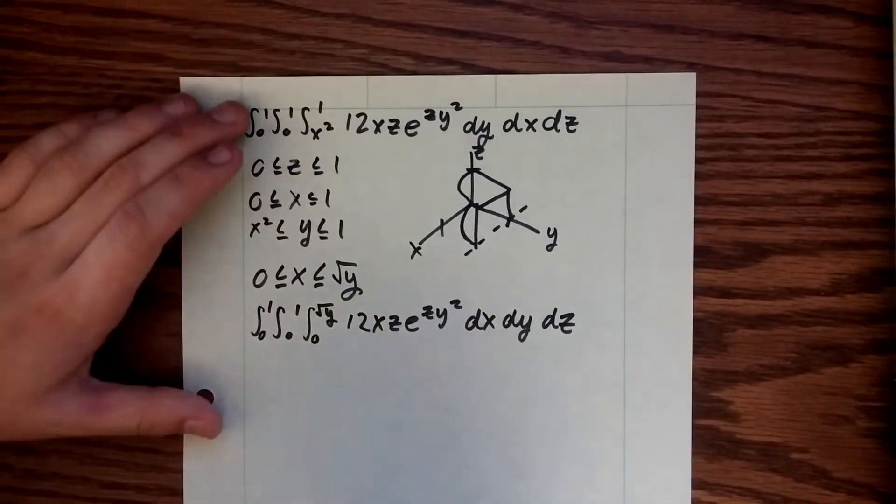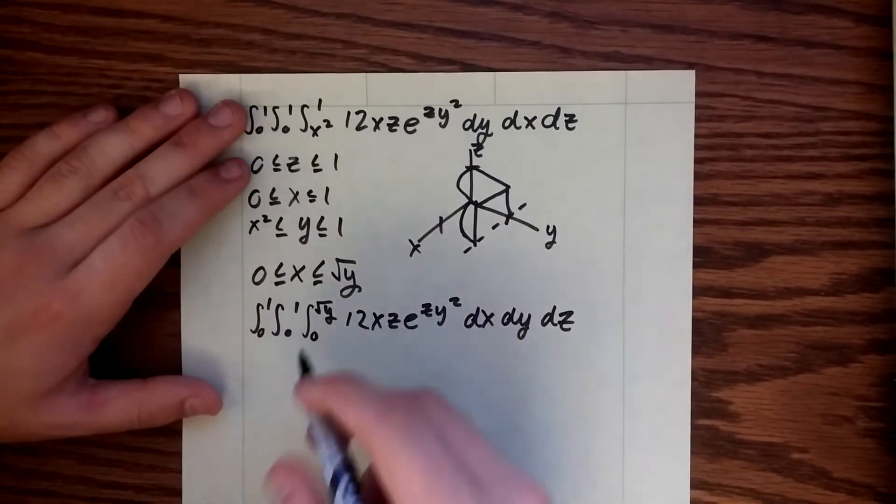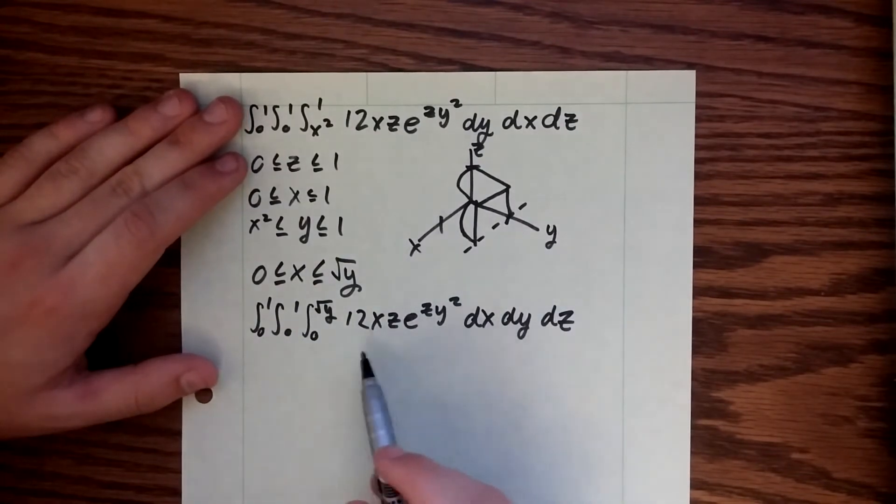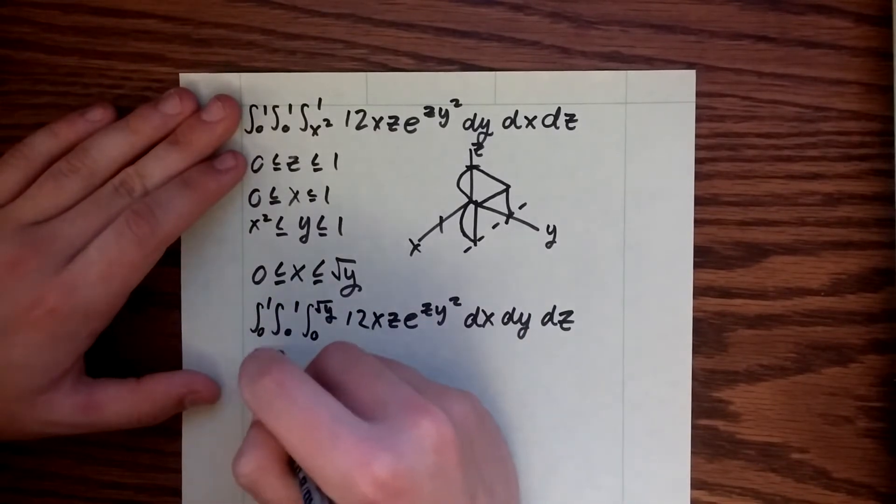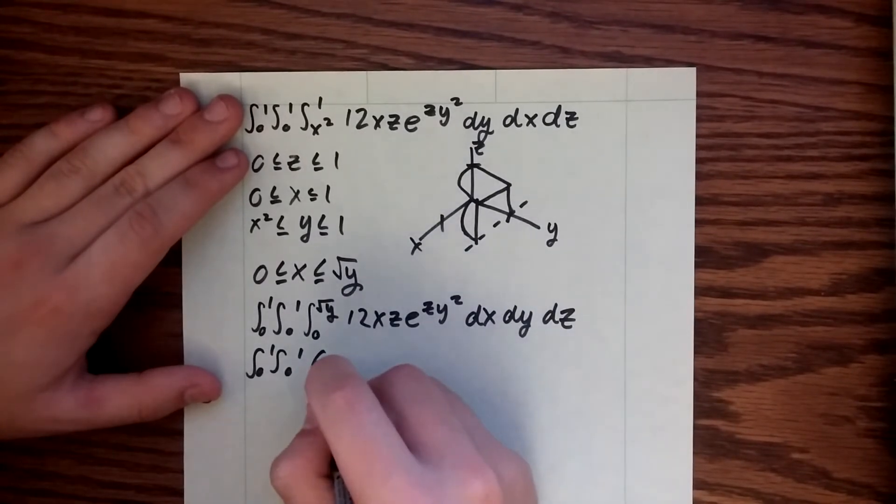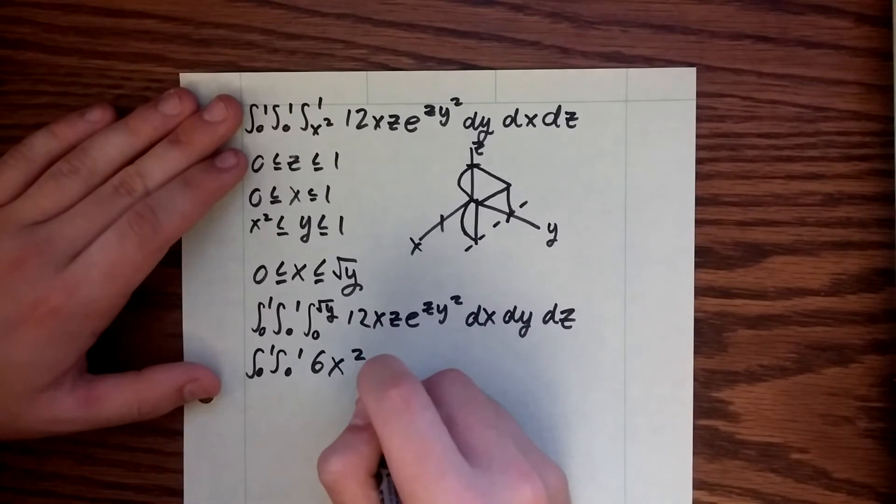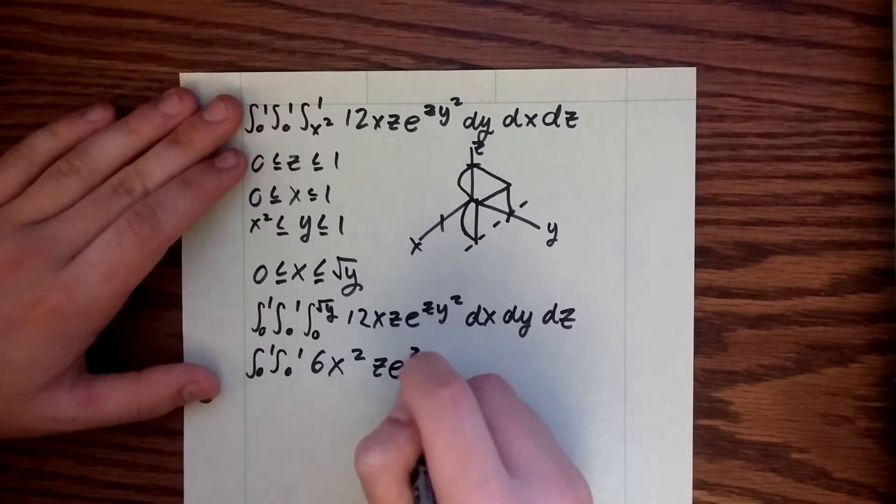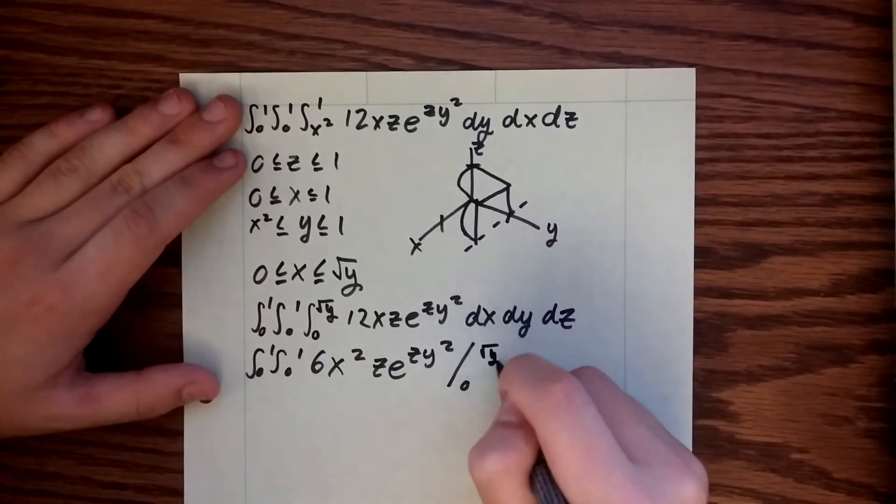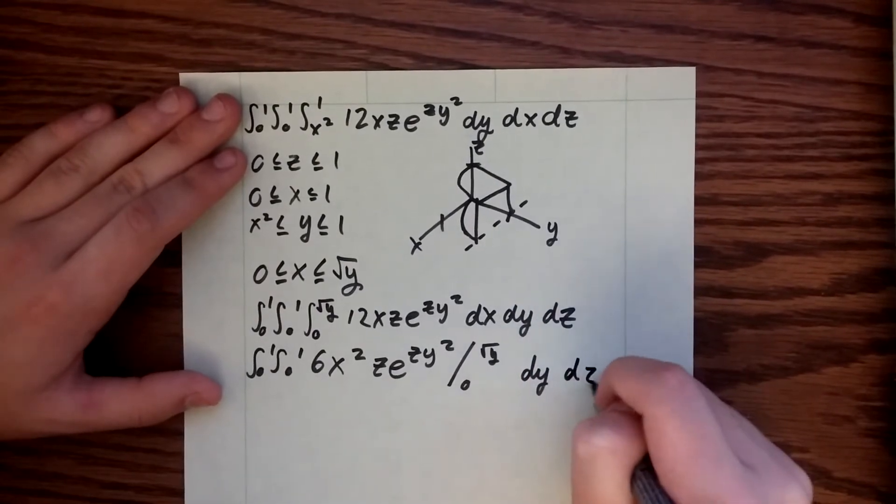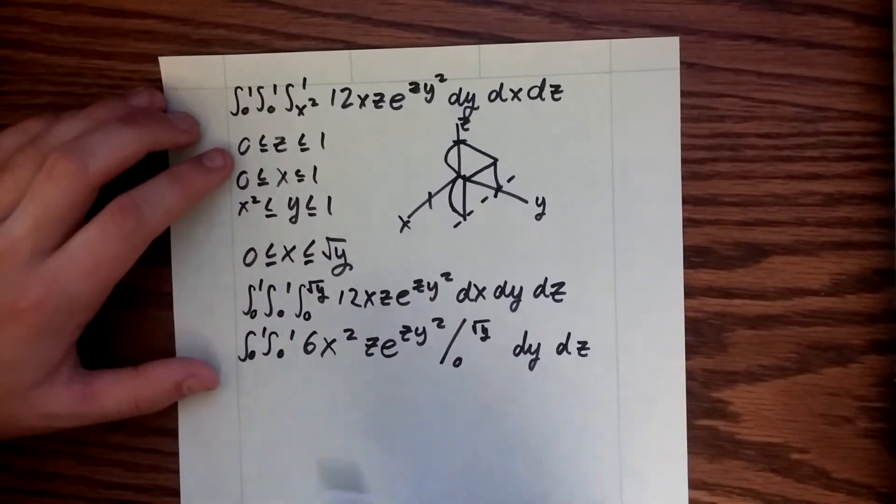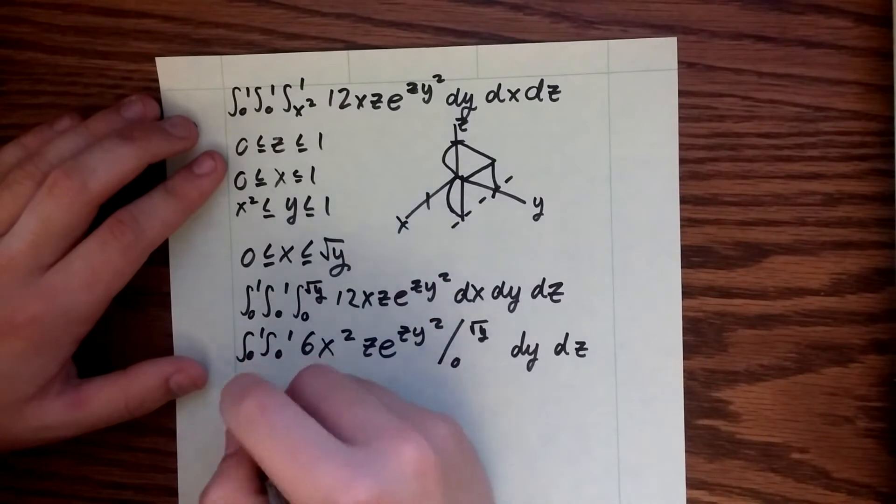This might not look too different at first, but after we start to integrate through it, you'll see that it's an easier integral to evaluate. So now we integrate with respect to x and end up getting 6x squared z e^(zy²) from zero to root y. It's good to remember to write these dy dz at the end just so you keep track of everything, and we just evaluate this integral real quick.